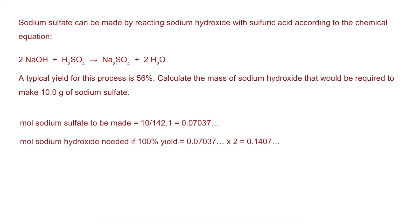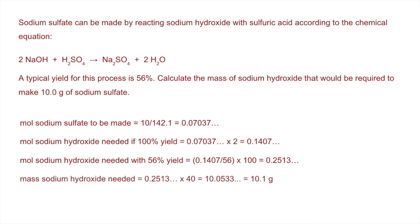Now factor in the 56% yield. Scale it up to account for only 56% yield by dividing by the yield and multiplying by 100. The moles of sodium hydroxide needed: 0.2513. Now multiply by the Mr of sodium hydroxide to get the mass needed, putting it to three significant figures: 10.1 grams.